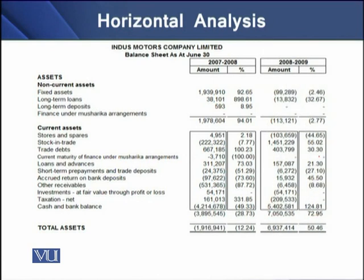On the screen, you can see the horizontal analysis for balance sheet items for four periods, in terms of two separate periods: 2007 to 2008 and then 2008 to 2009. Let's see changes happened in fixed assets. For 2007 to 2008, there is an increase in fixed assets by Rs. 1.939 million. In terms of percentage, this increase is 92.67%.